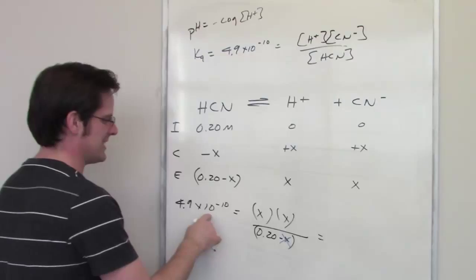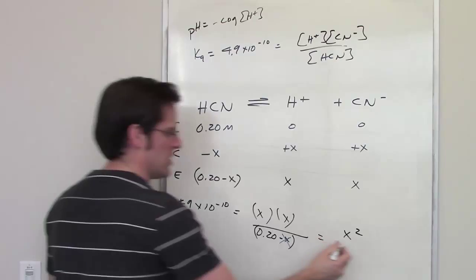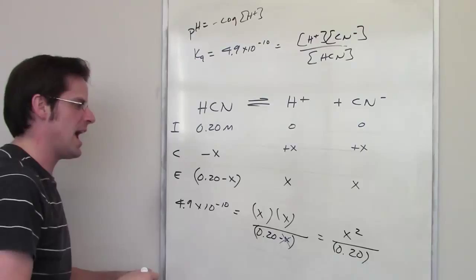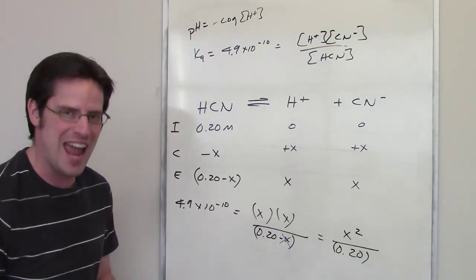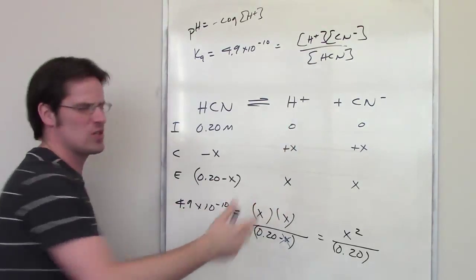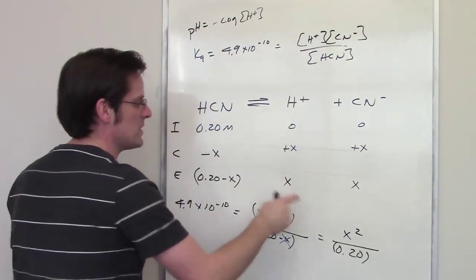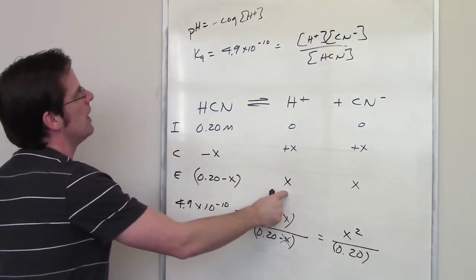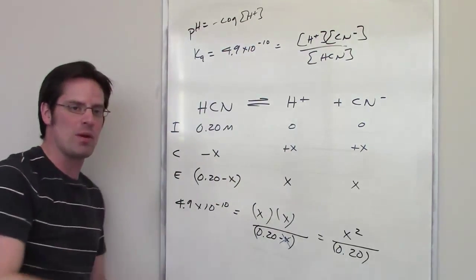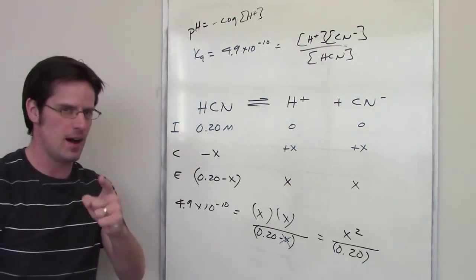So what I've got here is 4.9 times 10 to the negative 10 being equal to x squared, that is x times x in the numerator, divided by 0.20. All I have to do is solve for x. Once you solve for x, that is going to be equal to the concentration of H+. It also is equal to the concentration of CN-, but I don't care about that really. Right now I just care about the concentration of H+. So once I solve for x, I can take that number and put it up here in the equation for pH and determine what the final pH is going to be for this weak acid scenario. I'll let you go ahead and do that on your own.